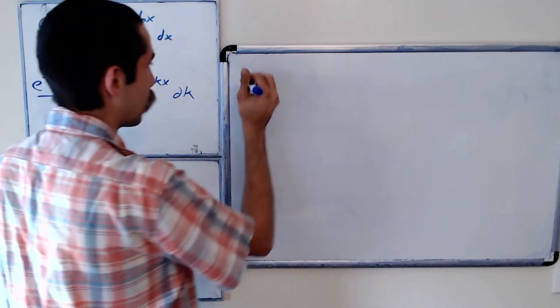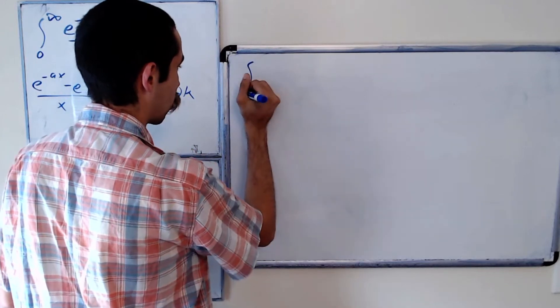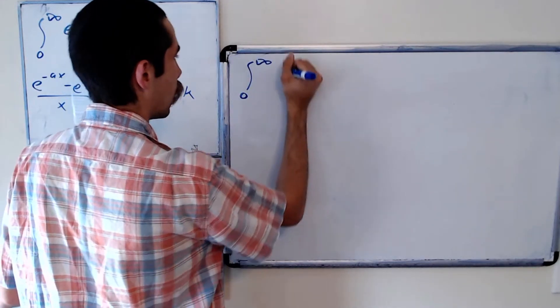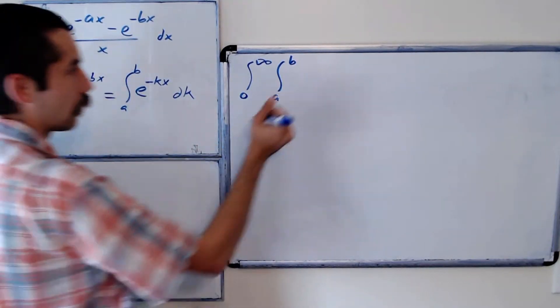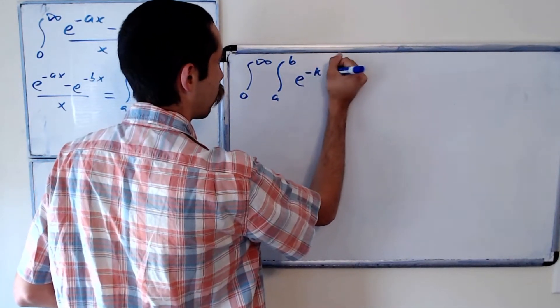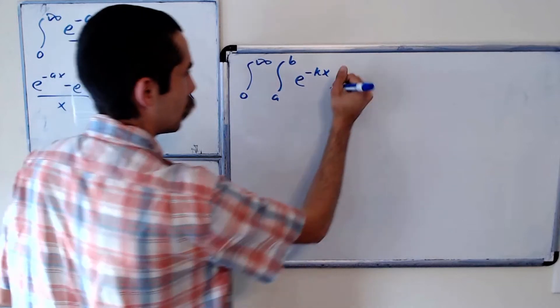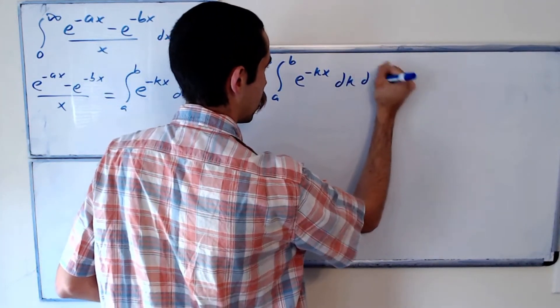Okay, so our integral could be written as the integral from 0 to infinity of the integral from a to b of e to the negative kx. So this function looks a lot easier to work with, dk dx.